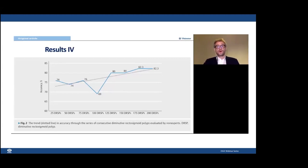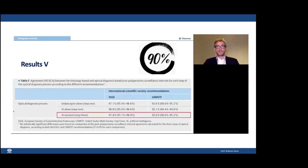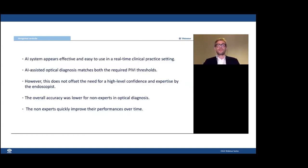These results were not entirely unexpected, as two-thirds of diminutive rectosigmoid polyps were evaluated by experts, who tend to have better performance profiles. However, when focusing on non-experts, our exploratory analyses show a promising trend: NPV and accuracy increase quickly over time, demonstrating a relatively short learning curve for non-expert endoscopists who approach expert performance over time. AI-assisted polyp characterization also allowed a correct post-polypectomy surveillance interval to be set in more than 90% of cases according to both ESGE and US guidelines.